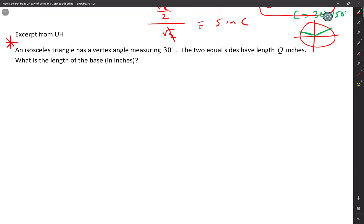So here we go. It says, an isosceles triangle has a vertex angle measuring 30 degrees, and two equal sides have a length of Q inches. What is the length of the base in inches?